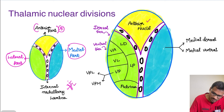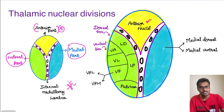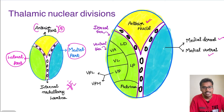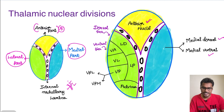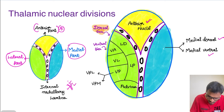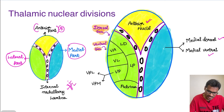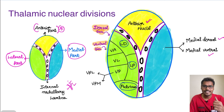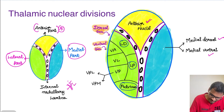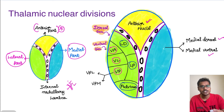The anterior part has only the anterior nuclei — very simple to remember. The medial part has only two divisions: medial dorsal and medial ventral. Coming to the lateral part, which is very important and has multiple divisions — it is divided into a dorsal tier and a ventral tier. The dorsal tier includes lateral dorsal (LD), lateral posterior (LP), and pulvinar. The ventral tier includes ventral anterior, ventral lateral, and ventral posterior, which is further divided into ventroposterolateral and ventroposteromedial.